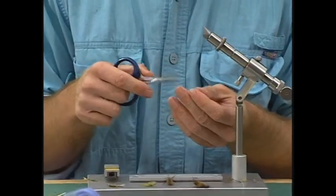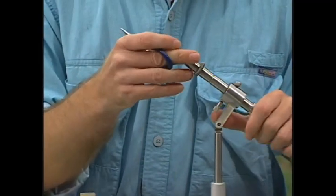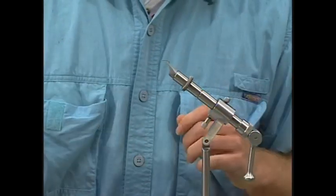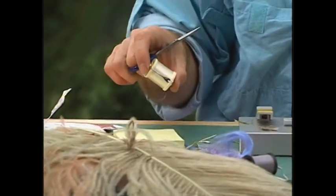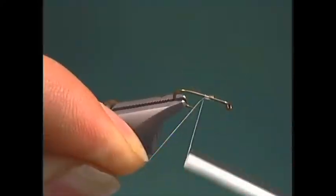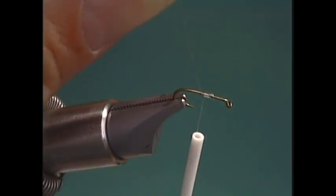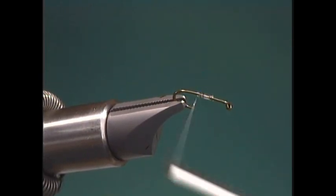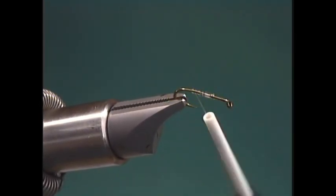To start off with, we're going to be using a 3769 hook and we're going to be using clear monofilament thread. We'll get that on there and wrap back to just beyond the point of the hook.